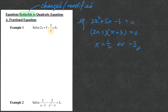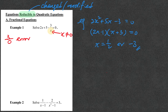In solving an equation which is reducible to a quadratic equation, you have to be alert that there may be a restriction on the answer of x. For example, in example 1, you have to make sure that x cannot be 0 because it's a fraction — otherwise it becomes 3 over 0, which is an error in the calculation. Now you check the answer: none of them is equal to 0, which means both of them can be accepted. Let's finish the question, example 1.